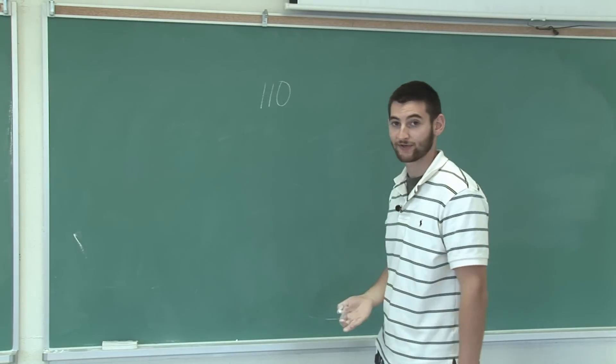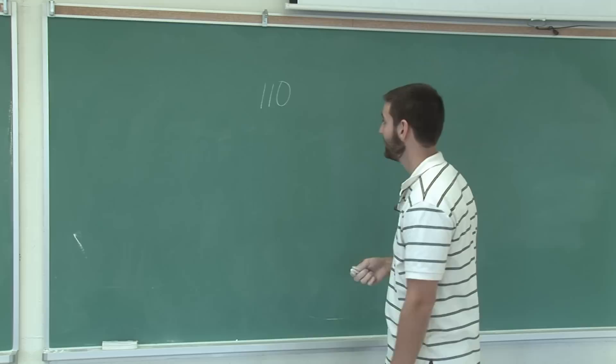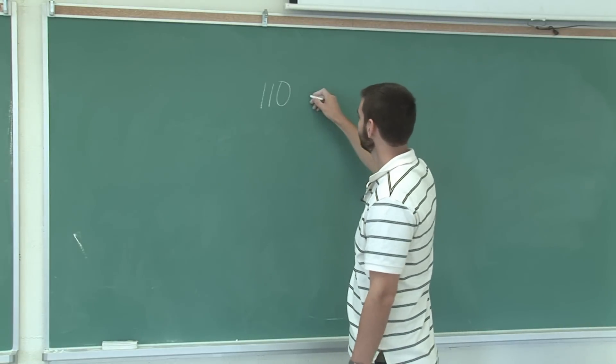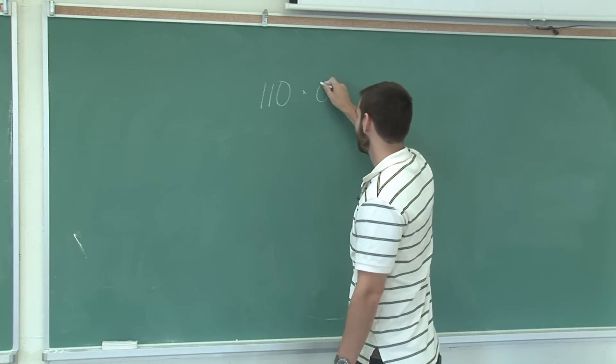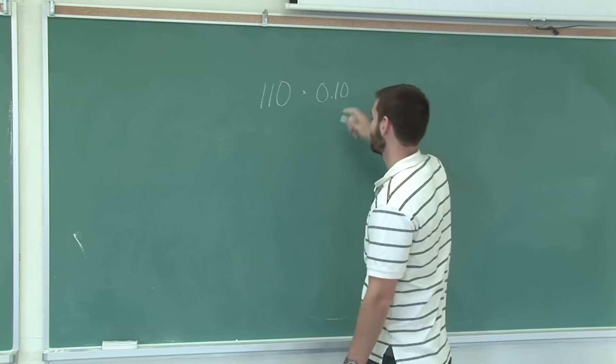First, we find out what 10% of the item's value is, which is the original value multiplied by 10% or 0.10.